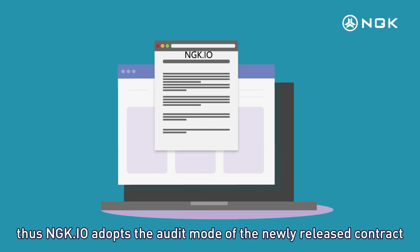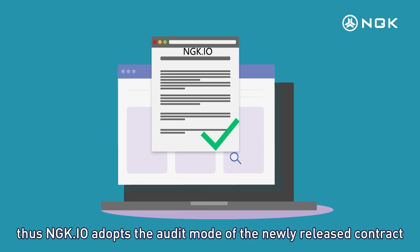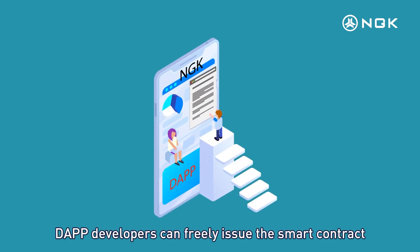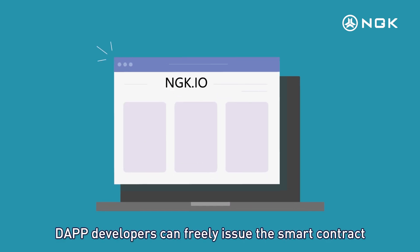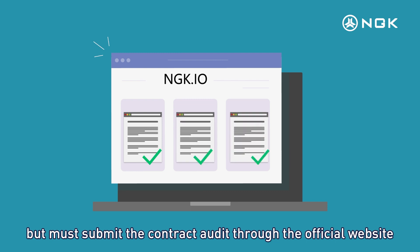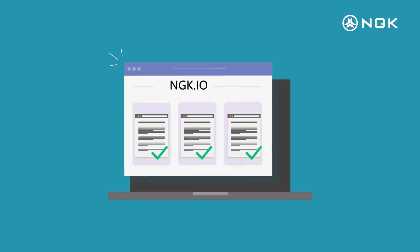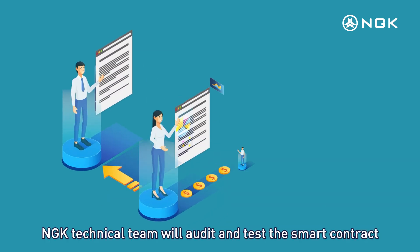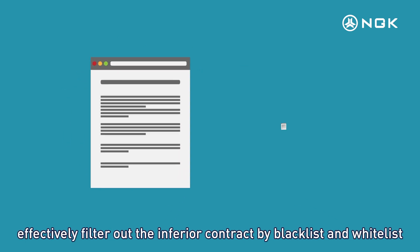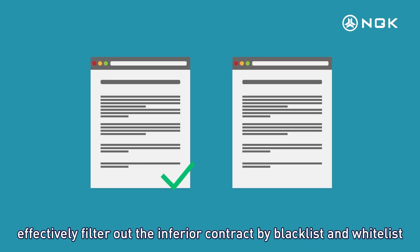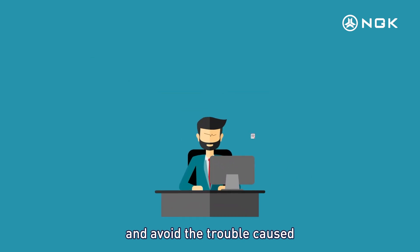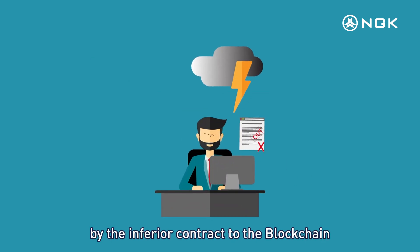Thus, NGK.io adopts an audit mode for newly released contracts. Dapp developers can freely issue smart contracts, but must submit the contract for audit through the official website. The NGK technical team will audit and test the smart contract, effectively filtering out inferior contracts through blacklists and whitelists, and avoiding the trouble caused by inferior contracts to the blockchain.